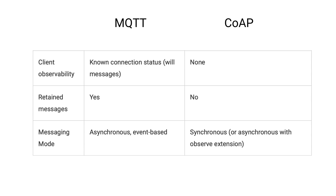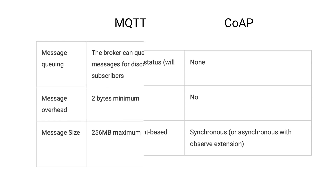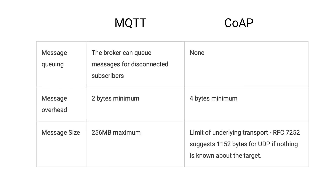MQTT has asynchronous event-based messaging, meaning the publisher does not have to wait for the consumer due to the decoupled publish-subscribe architecture — a very scalable communication model. CoAP primarily uses a synchronous messaging mechanism, meaning when a client sends a message, it expects the server to be online to provide a response in real-time. CoAP also supports an asynchronous publish-subscribe model via its Observe extension. In MQTT, the broker can queue messages for disconnected subscribers, whereas CoAP has no message queuing feature.